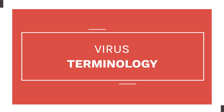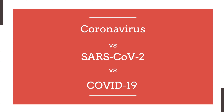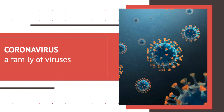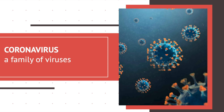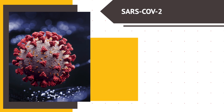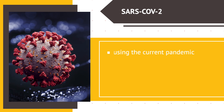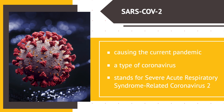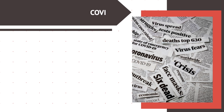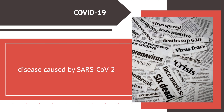There is some terminology associated with the virus itself. What is the difference between coronavirus, SARS-CoV-2, and COVID-19? Coronavirus is a family of viruses. The current pandemic is caused by SARS-CoV-2, the novel coronavirus, which is a type of coronavirus. SARS-CoV-2 stands for Severe Acute Respiratory Syndrome Related Coronavirus 2. Finally, COVID-19 is the disease caused by SARS-CoV-2.